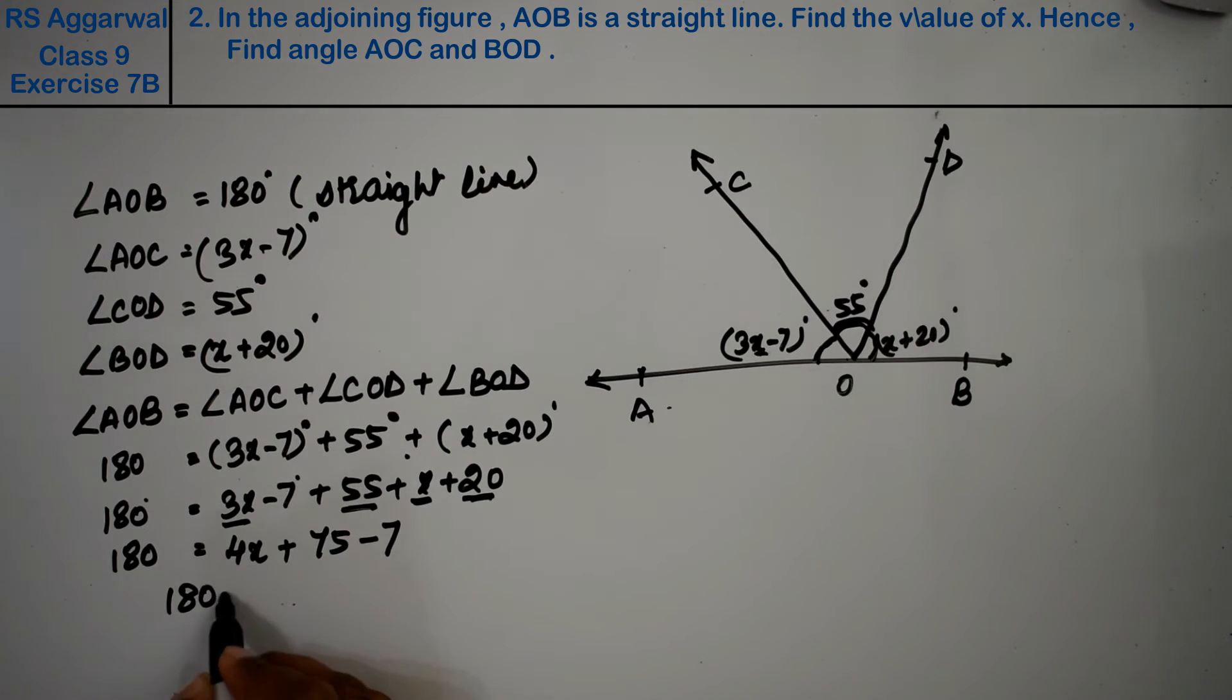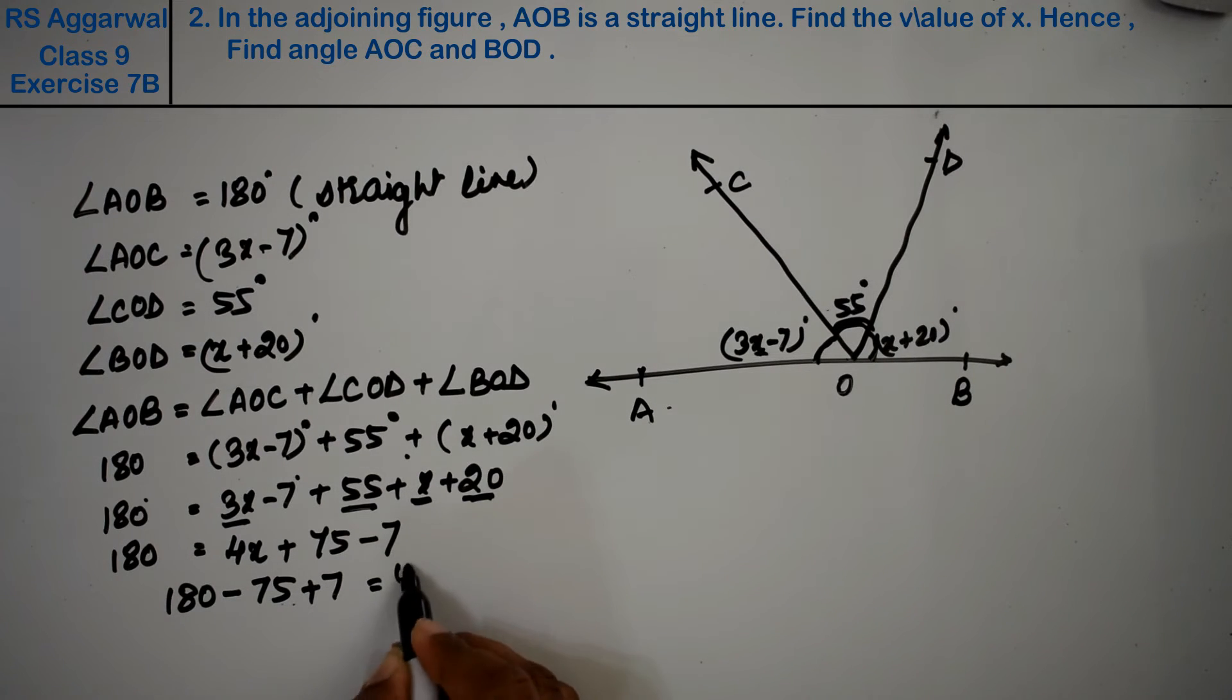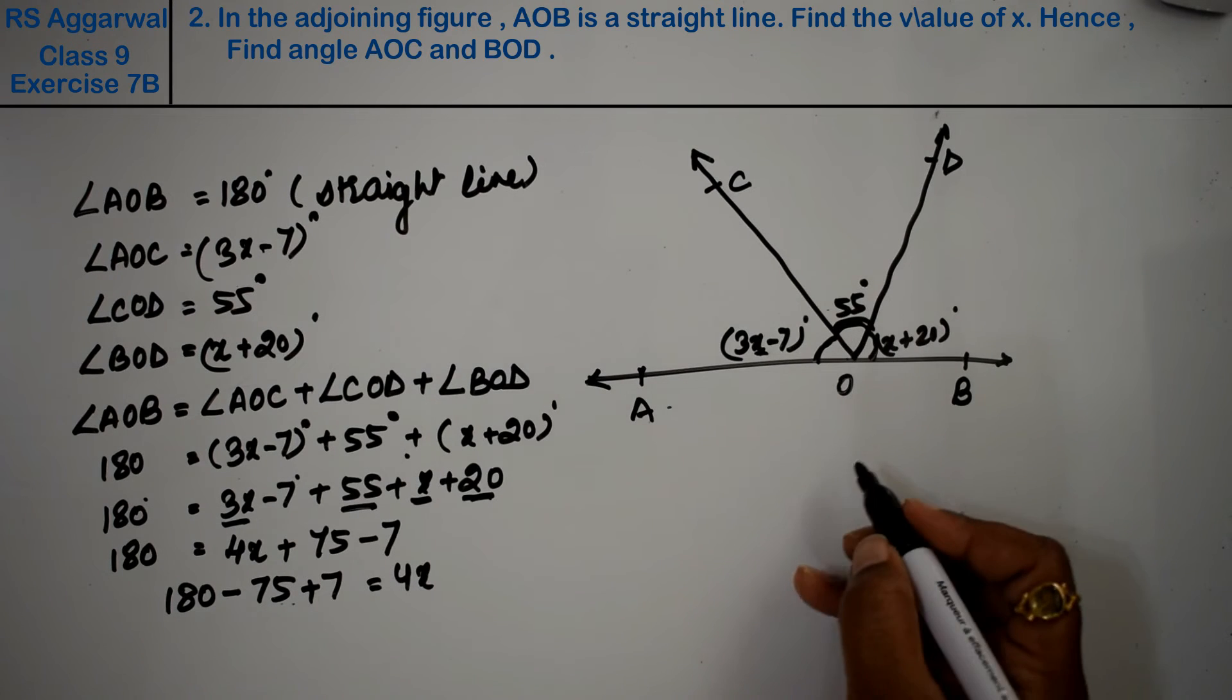180 minus—these came here, so they became negative. Plus 7 equals 4x.